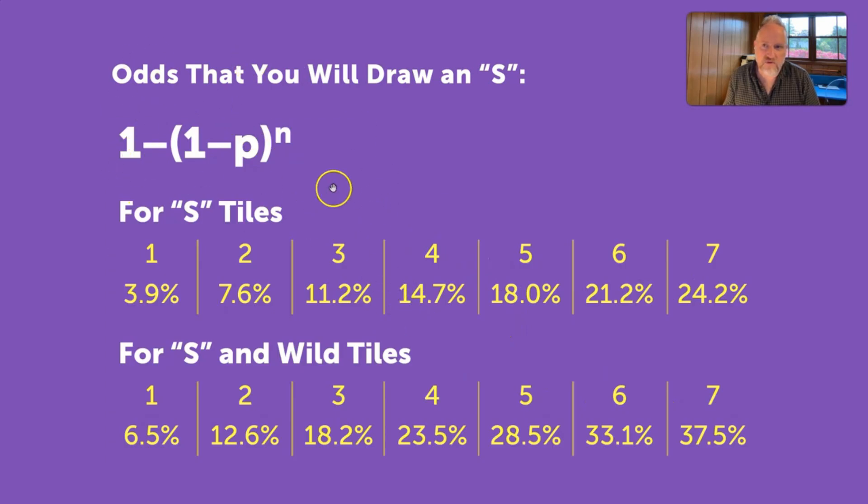This is the equation here. I won't go into that too much either. But the P is the probability of you getting an S or an S in a wild, depending on what you're calculating. And the N is how many times you do that. So, for S tiles, in that same scenario right here, if you were to draw one tile, it would be a 3.9% chance. But, if you were to swap all seven of your tiles at this point, you have almost a 1 in 4 chance that you would get an S back. Which is pretty good.